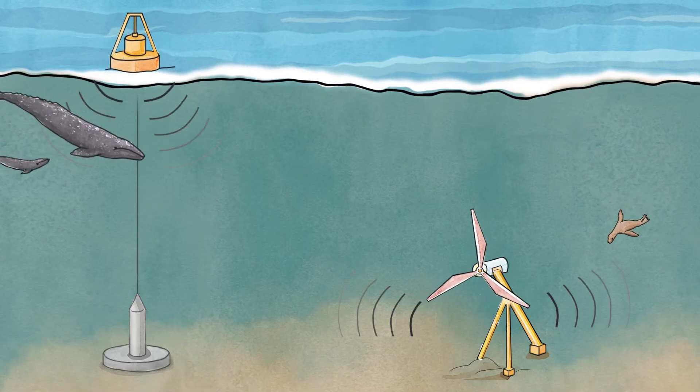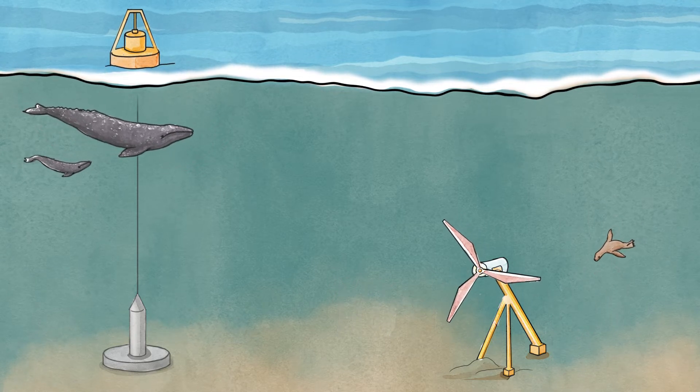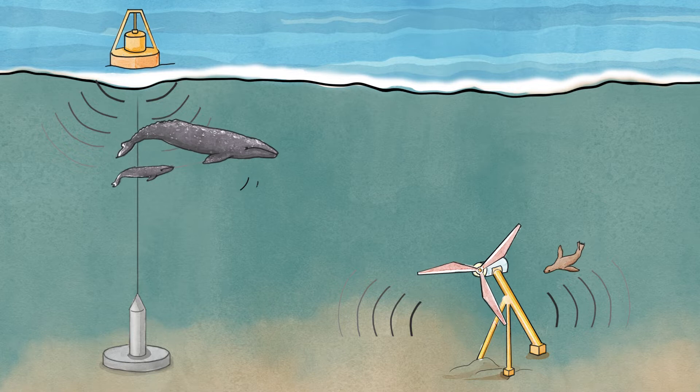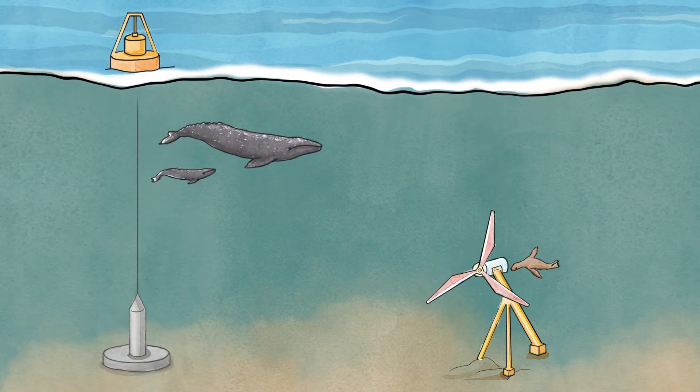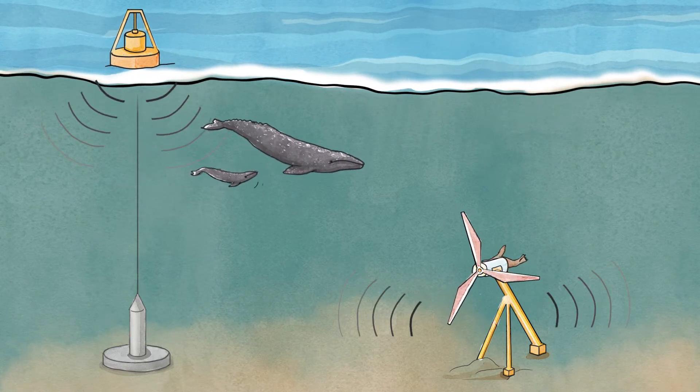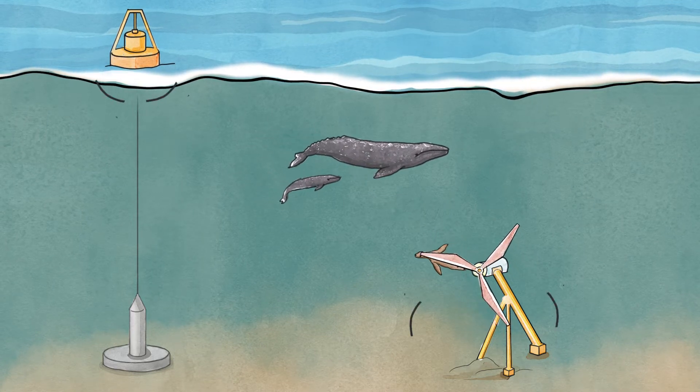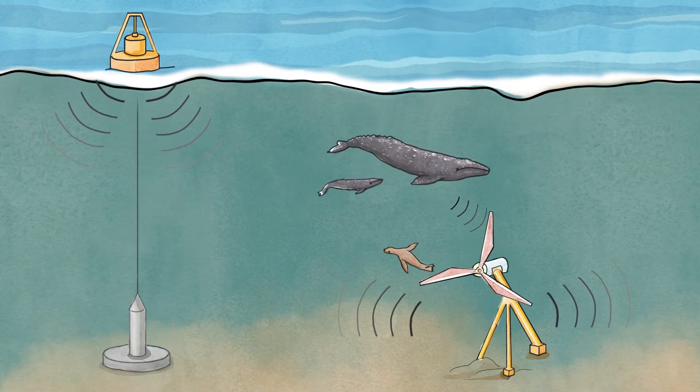Marine mammals and some fish species use sound to navigate, interact, forage and avoid predators. The ability of a marine animal to detect or respond to a sound depends on its hearing sensitivity and the characteristics of the sound.